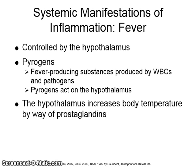Fever is controlled by the regulatory center in the brain called the hypothalamus, or the hypothalamic thermoregulatory center. Fever is a body temperature higher than the normal level of 98.6 degrees Fahrenheit, or 37 degrees centigrade, and is associated with a systemic inflammatory response.